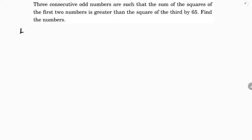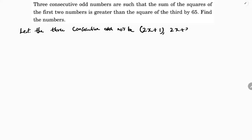Let the three consecutive odd numbers be 2x+1, 2x+3, and 2x+5, because 2x+1 is the definition of an odd number. Adding 2 each time gives the next consecutive odd numbers.